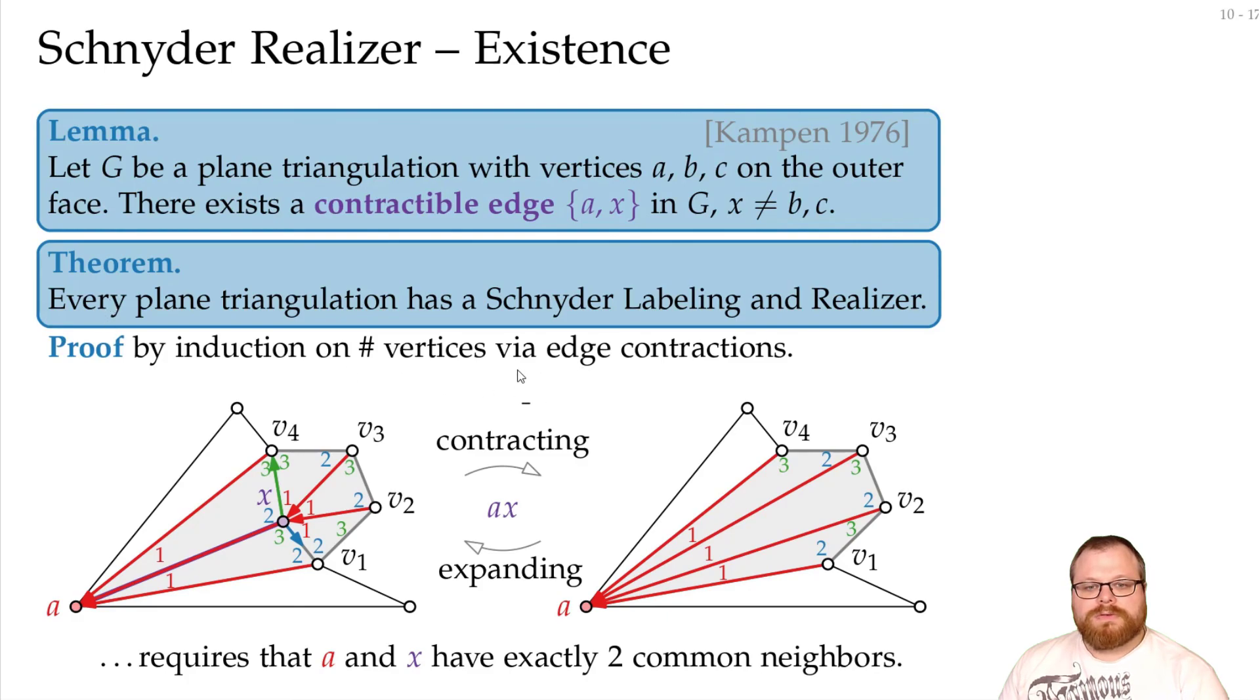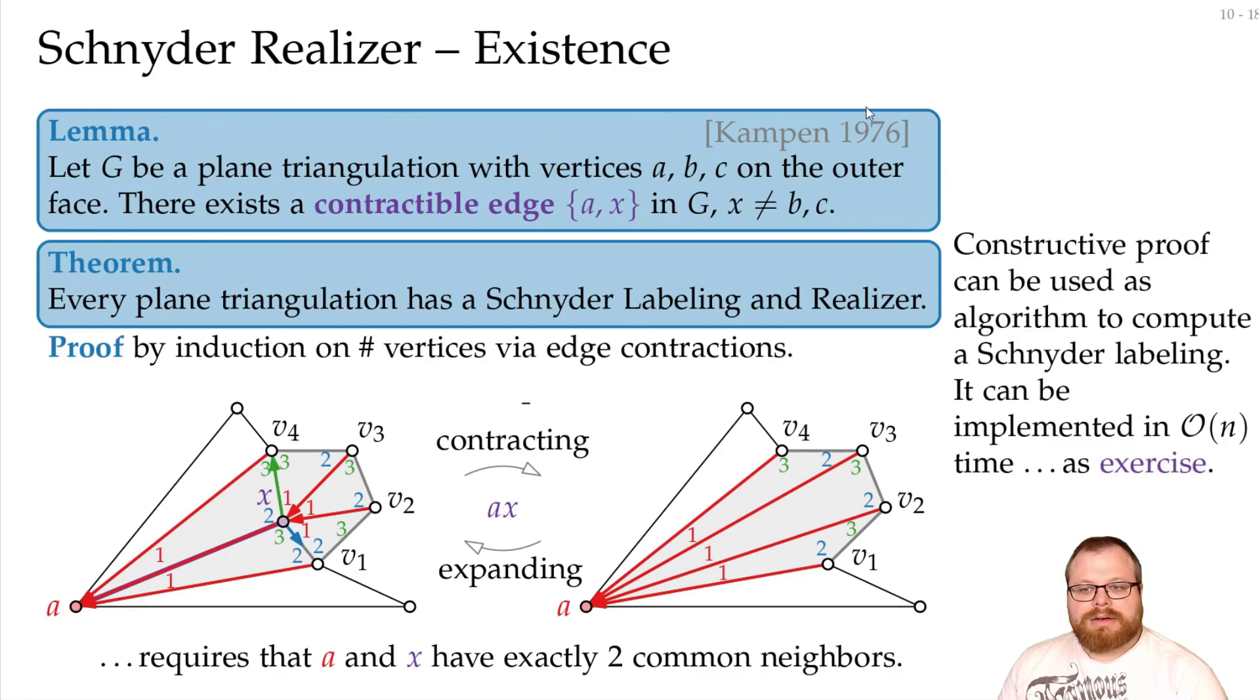And from this proof, we do not only get the existence of a realizer, but it also immediately gives us an algorithm. And with that algorithm, we can find a Schnyder labeling in linear time. And in your homework exercise, you will have to prove how to do this in linear time.